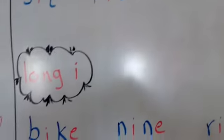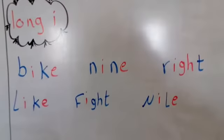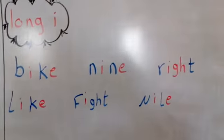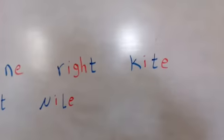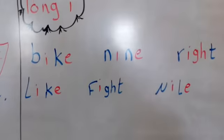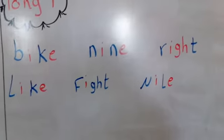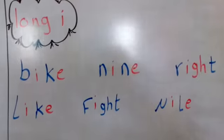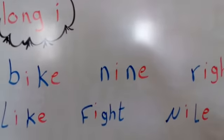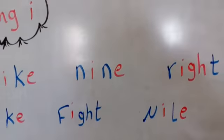The long I: bike, nine, right, kite, like, fight, Nile. Bike, like you ride a bike. Nine is number nine.